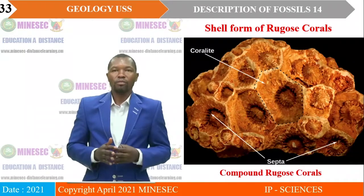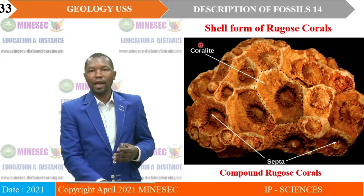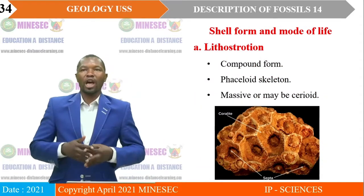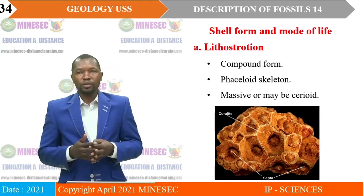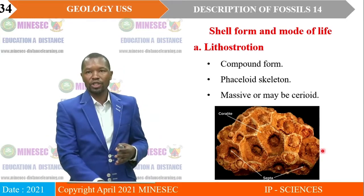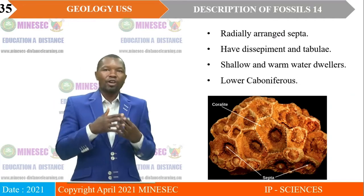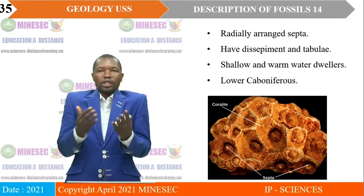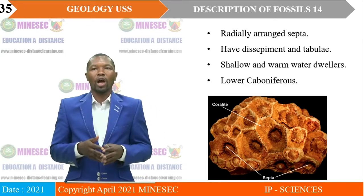The shell form of Rugose corals: in their shell form, the septa and the corallium are essential diagnostic features, especially for the compound forms. Shell form and mode of life: the first example is Lithostrotion, which has a compound form — fascioloid stellate. They are also massive or cerioid, with a circular appearance. They are radially arranged septa and have dissepiment and tabula. These features make them shallow and warm water dwellers. Their age is Lower Carboniferous.